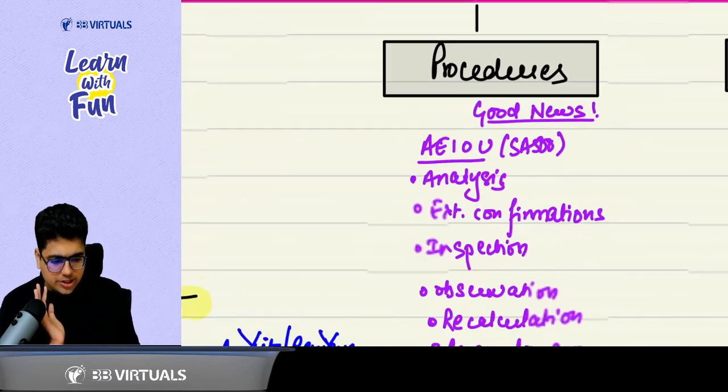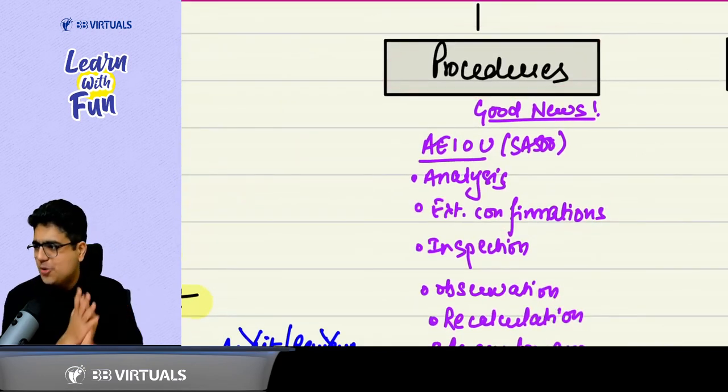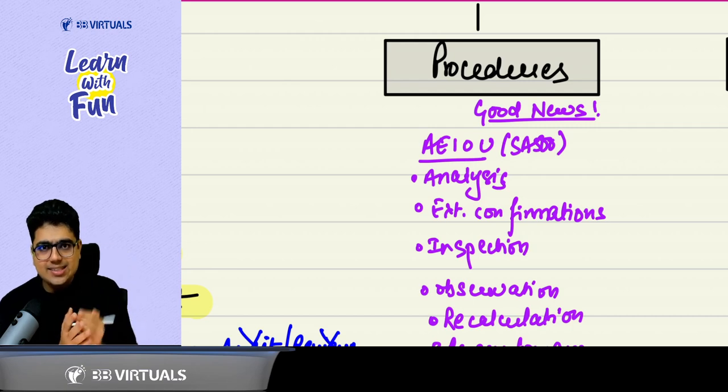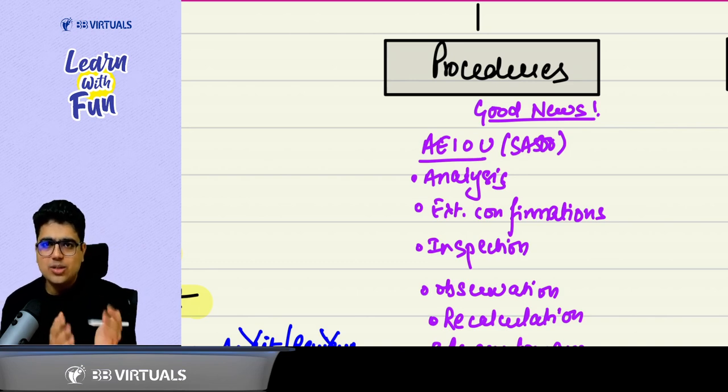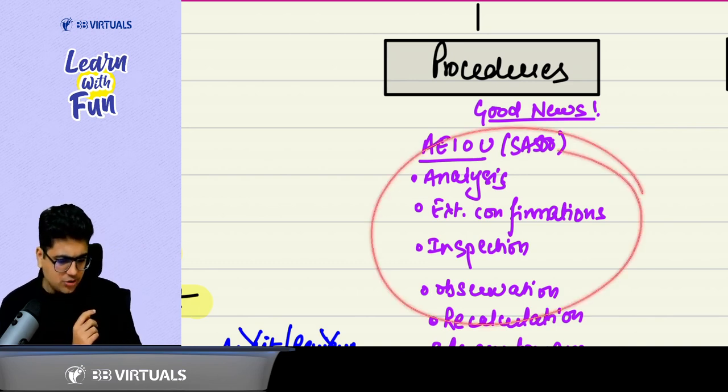Then we discussed about the audit procedures. The good news was we already know about these procedures. AEIOU: Analysis, external confirmations, I for inquiry, I for inspection, O for observation, U for recalculation, re-performance. These are the basic points you need to consider.